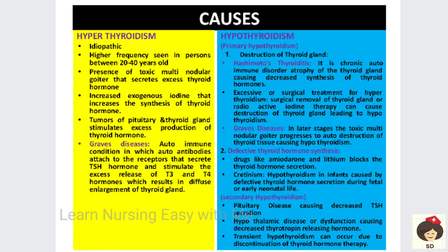Coming to the causes — in hyperthyroidism, the cause can be idiopathic, most common in 20 to 40 year olds, and there may be presence of toxic multinodular goiter. Whenever hyperthyroidism occurs, the thyroid gland starts producing more nodular goiter, and these nodules also start producing excess hormones, leading to hyperthyroidism.